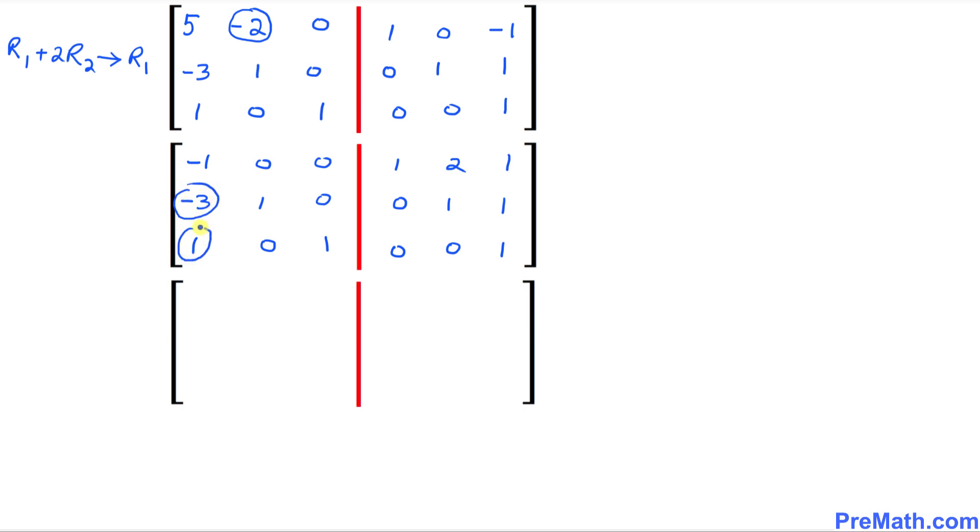Now we are going to make these negative 3 and 1 in row number 2 and 3 zeros. I am going to say row 2 minus 3 row 1 and put the answer in row 2 and for row number 3 I am going to say row 3 plus row 1 and put down the answer in row 3.